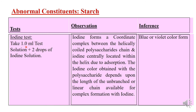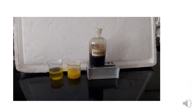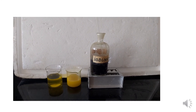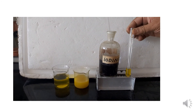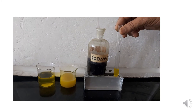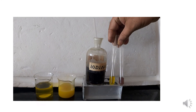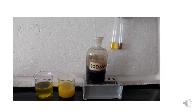For the test of starch, we take 1 ml of gastric juice and add two drops of iodine. Iodine forms a complex with the polysaccharide and gives a blue-violet color, indicating the presence of starch in the gastric juice sample. In this demonstration, gastric juice is taken and one drop of iodine is added — as you can see, it has turned a light violet color, confirming starch is present.